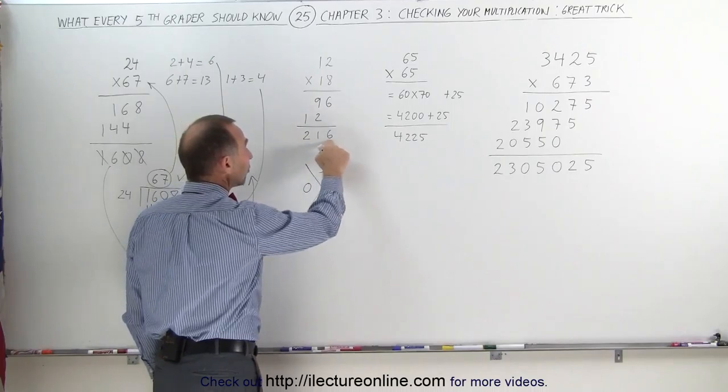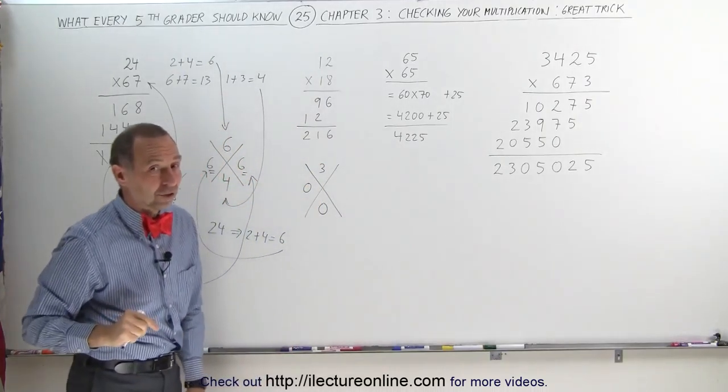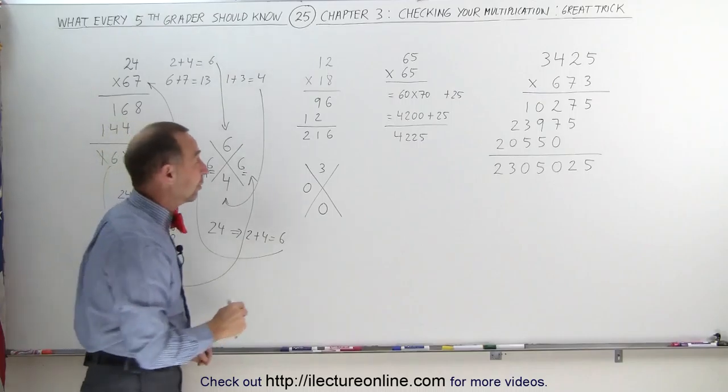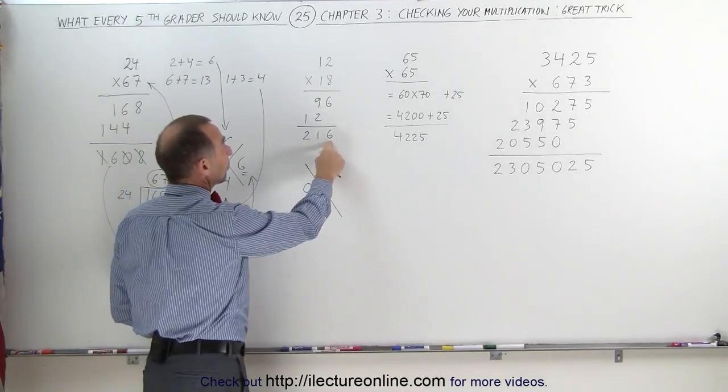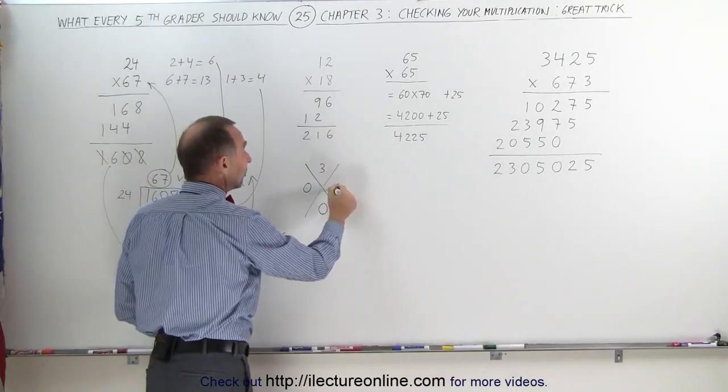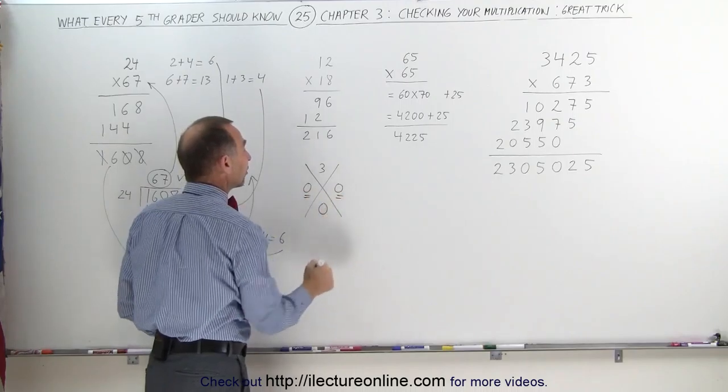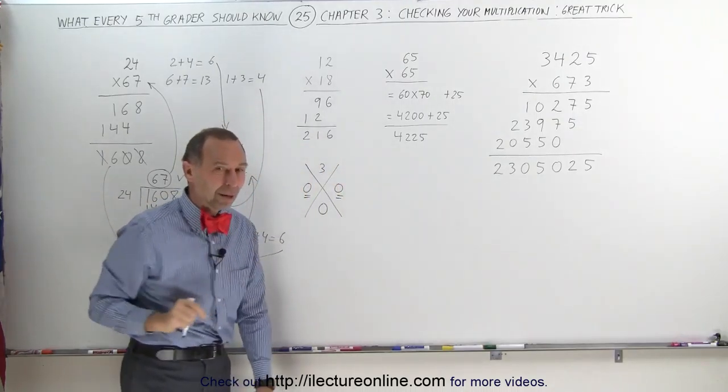Now all we have to do is add these numbers together, and they better add up to 0. But again, if it's a 9, that becomes a 0. 2 plus 1 is 3, plus 6 is 9, 9 becomes a 0, write a 0, these two numbers are the same, our answer is probably correct.